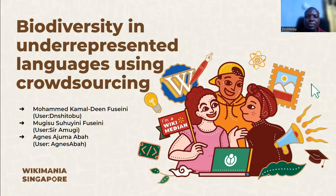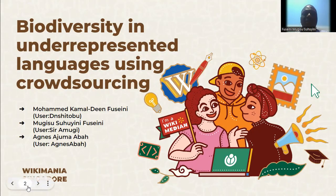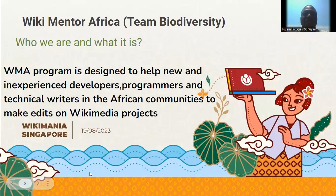My name is Faye Amogid. I go by the username Faye Amogid. I am the social media manager for Dagwana Wikimedia User Group, based in Ghana, specifically Tamarine. Today our presentation will be on Biodiversity in underrepresented languages using crowdsourcing — Wikimedia Africa, who we are and what it is about.